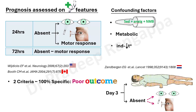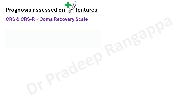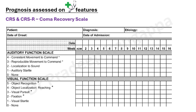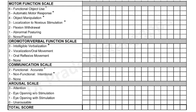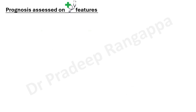There are advanced scoring tools such as the Coma Recovery Scale — Revised, which has six hierarchical components: auditory function, visual function, motor function, verbal function, communication, and arousal scales. Intensivists do not need to memorize all these, but bear in mind the Coma Recovery Scale Revised is validated for long-term prognostication of HIE patients, perhaps after one to two weeks.